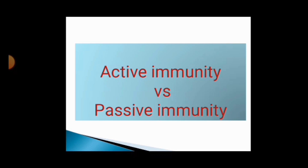Innate immunity is the defense system with which we are born. Whereas acquired immunity, or adaptive immunity, is not present at birth — we develop it over our lifetime. This acquired immunity is further divided into two types: active immunity and the other is passive immunity. We will discuss the differences between active immunity and passive immunity.